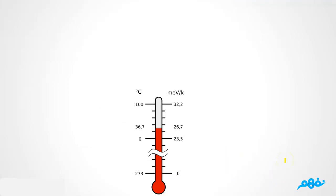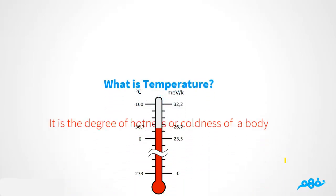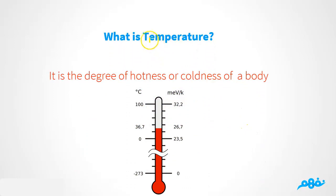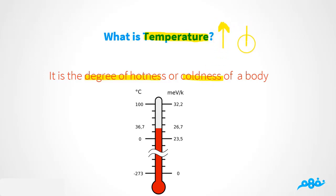Now, what is temperature? We have a thermometer here. Temperature is a very important word — it's actually a degree of hotness or coldness. When you're asked about temperature, you have to think about two key words: hotness or coldness. When people say you have a high temperature or a low temperature, they are referring to the degree of hotness or coldness.